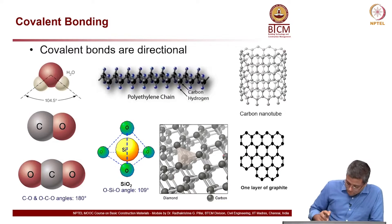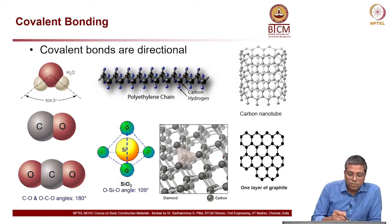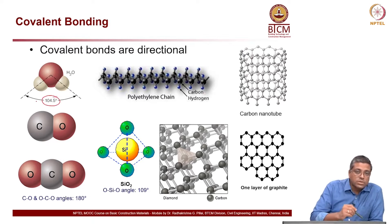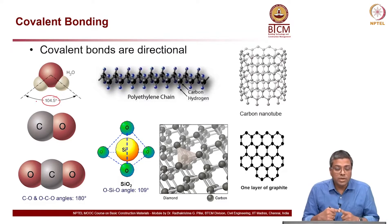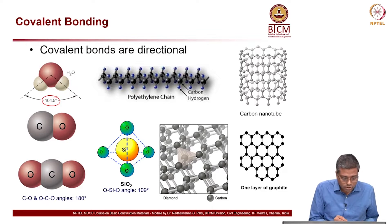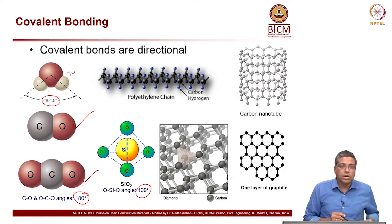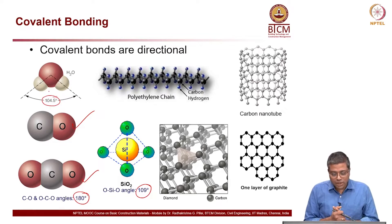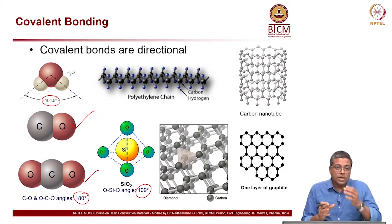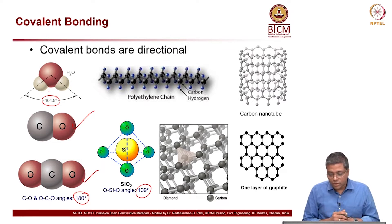Covalent bonds are directional in nature. What this means is there are specific angles at which these bonds are placed, and they do not change much — they are fixed angles. In case of CO2, the angle is 180 degrees; in case of silica it is 109 degrees; in case of water it is 104.5 degrees. These angles have a special nature which affects the rearrangement and behavior in different material systems containing this kind of atomic structure.